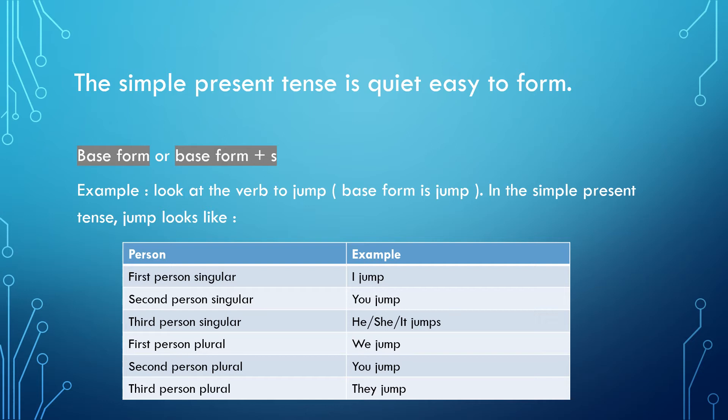But in the third person singular — that is, along with he, she, it — it adds -s along with the base form of the verb. This is one thing that you should keep in mind.